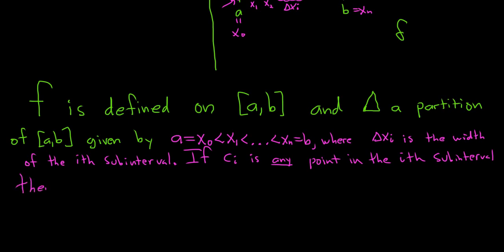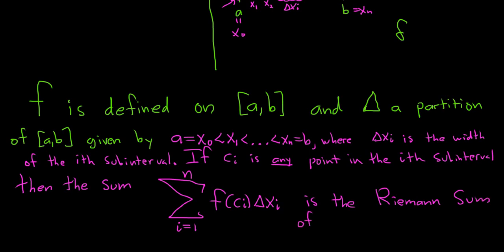So if c sub i is any point in the i-th sub-interval, then the sum, so the sum here, we have a sum. The sum goes from i equals 1 to n. And it's the sum of the areas of the rectangle. So it's the height, which we said was f of c sub i, times the width of the rectangle, which is delta x sub i. So this is the Riemann sum of f for the partition delta. So again, we take a bunch of random rectangles, and we add up their areas, and we call that a Riemann sum. All of this is just a formal way of saying all that.